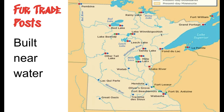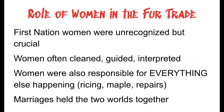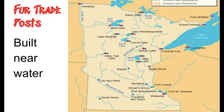If you look at the fur trade posts, they're all on water. This makes sense because it's much easier to carry something over water than over land. If you're able to put a fur post on water, you can load up a canoe — the historical version of a semi-truck or freight car on a train — and that beats having to carry it personally.